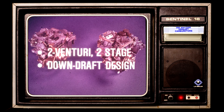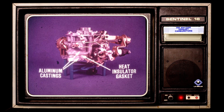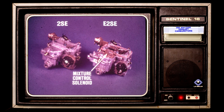Both models are two venturi, two-stage carburetors utilizing a downdraft design. Lightweight aluminum castings are used for the air horn, float bowl, and throttle body. A heat insulator gasket is located between the throttle body and float bowl to reduce heat transfer to the float bowl.